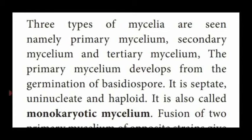From basidiospores only the primary mycelium is germinated or produced. This primary mycelium is septate — between the cells there are cross walls or septa. It contains only one nucleus, that is uninucleate, and is haploid in condition — that means n number of chromosomes. So the primary mycelium is septate with cross walls, contains only one nucleus — uninucleate — and is haploid with n number of chromosomes.